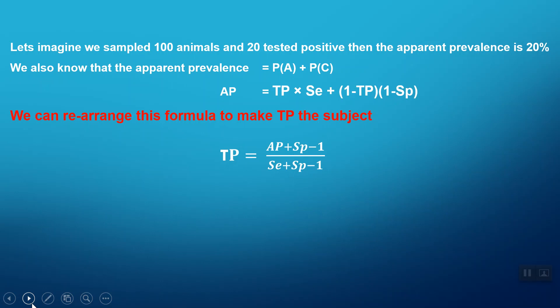If we simply rearrange that equation algebraically, that is the formula that we will end up with. You can see that we know the apparent prevalence—that's 20%.